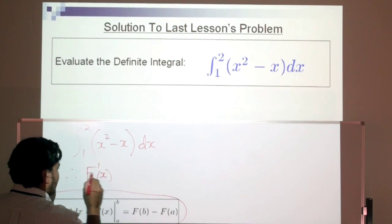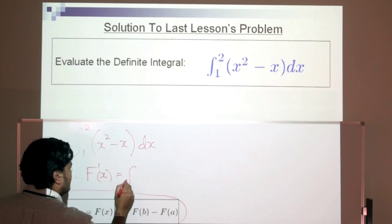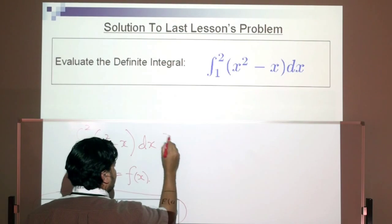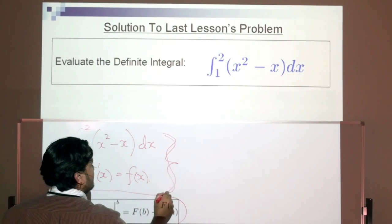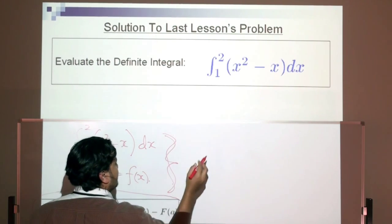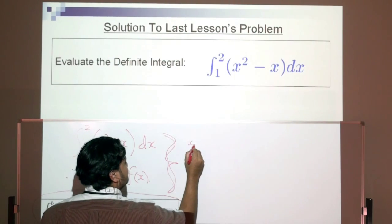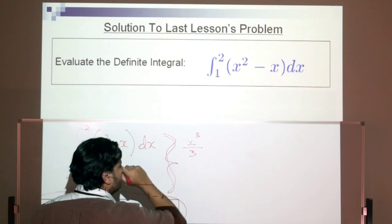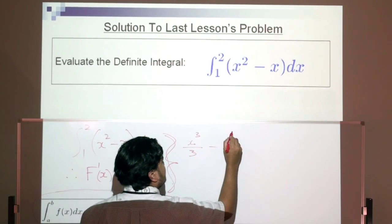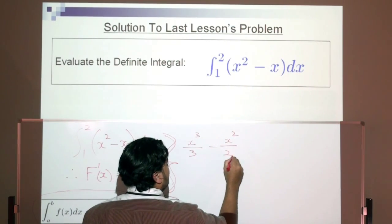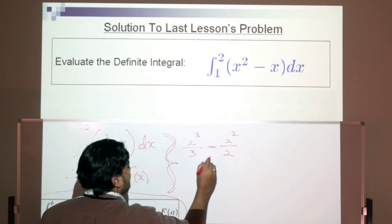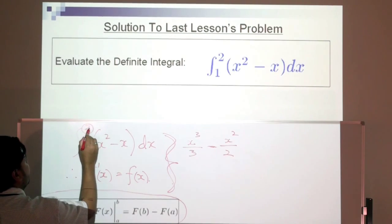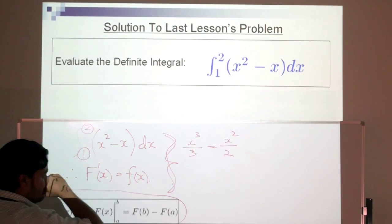The derivative of a capital F function of x is equal to the small f function of x. So we take x squared and x: x squared becomes x cubed over 3, and x becomes x squared over 2. Our upper limit is 2 and the lower limit is 1.